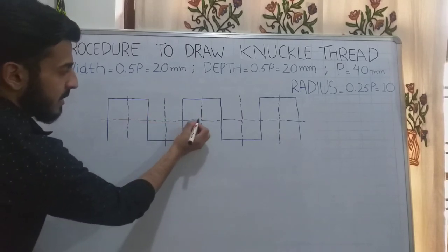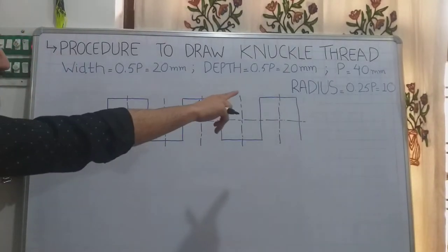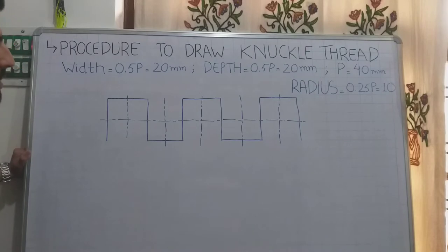I will make arcs. The compass's radius is 0.25p, which is 10mm.